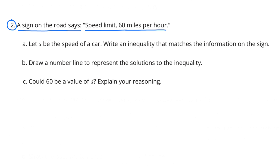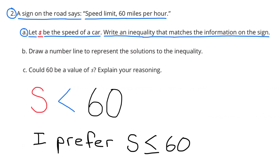Number 2: A sign on the road says speed limit 60 miles per hour. Part A: Let S be the speed of a car. Write an inequality that matches the information on the sign. I wrote S is less than 60. I prefer S is less than or equal to 60, but we haven't gotten to the less than or equal to sign yet.